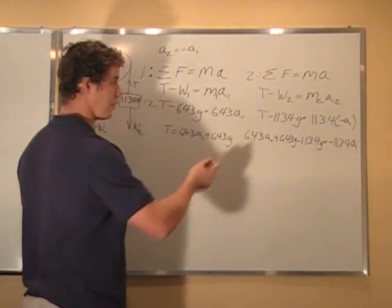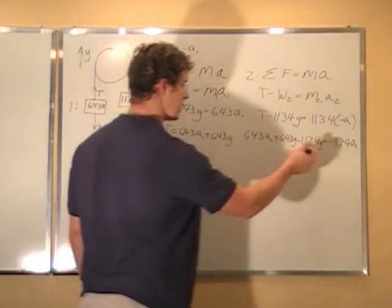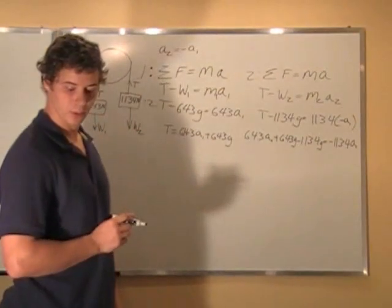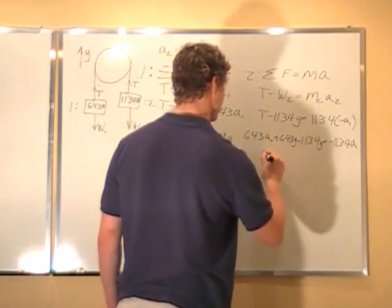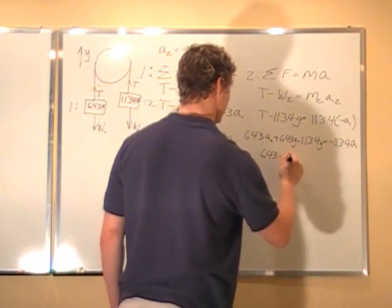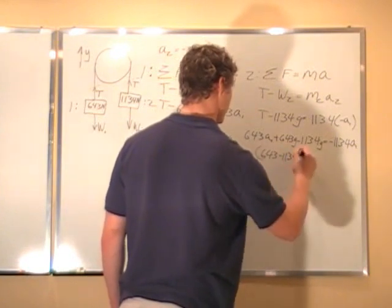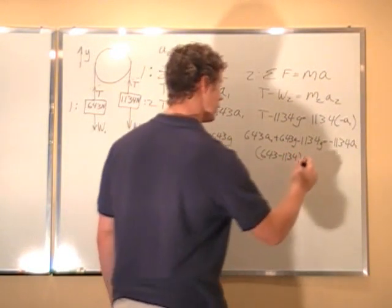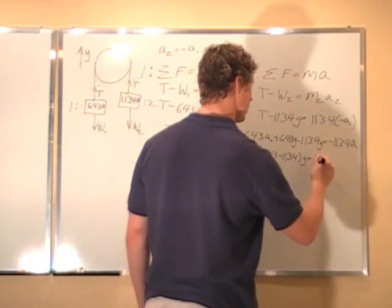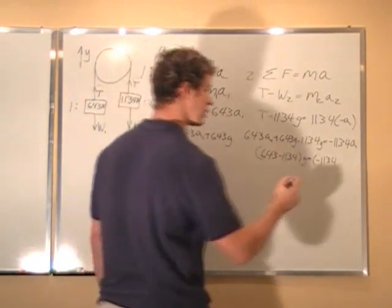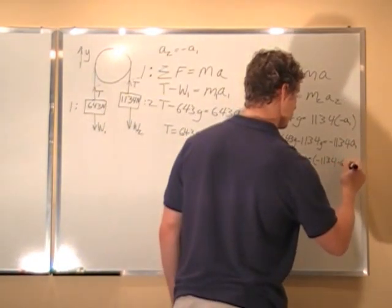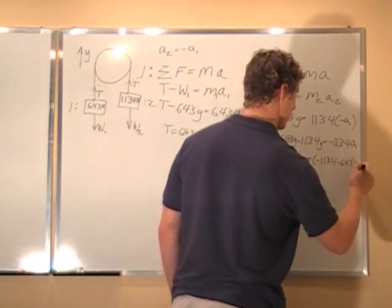So all I have to do is combine my like terms now. So the g's here. I go 643 minus 1134. Give me 643 minus 1134 times g equal to negative 1134. And I am subtracting 643 to the other side. Minus 643 a1.